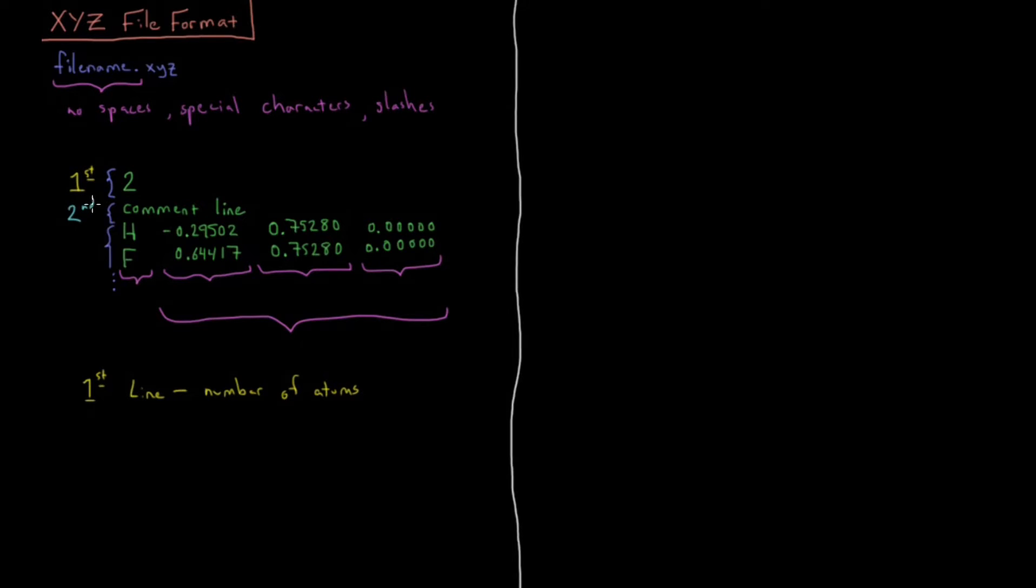And the second line is a comment line. That means it can be anything that I want. In this particular case, a lot of my XYZ files I might name what the molecule is like hydrogen fluoride, I might put a note to myself about how I got the structure, but the comment can be anything I want or it can be blank. Anything goes there.